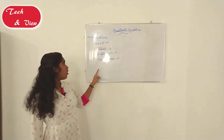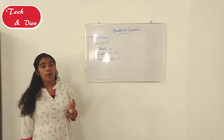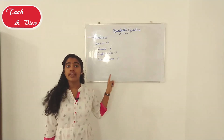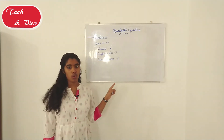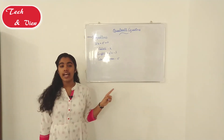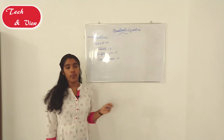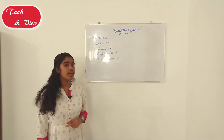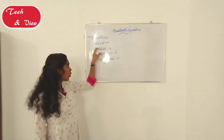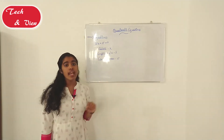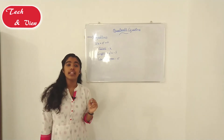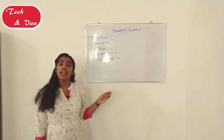Therefore, when a polynomial is equated to 0, we get an equation. An equation is formed when you equate a polynomial to zero.